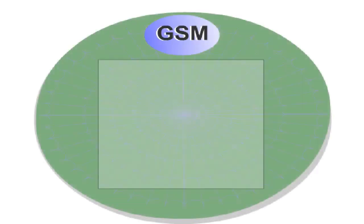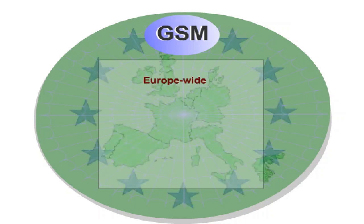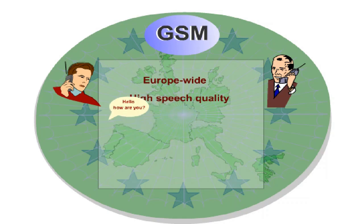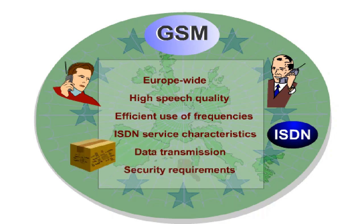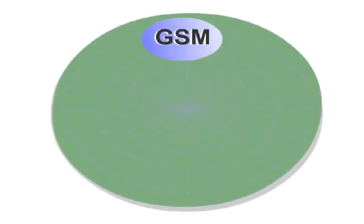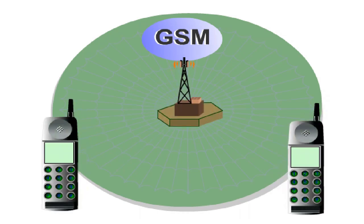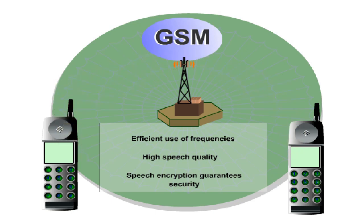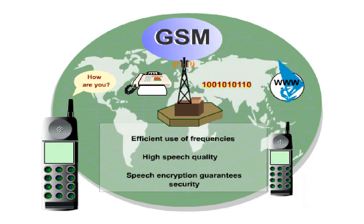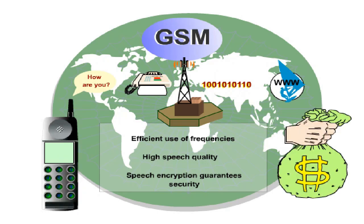The GSM specification had to consider the following: the system had to function Europe-wide, provide a high speech quality, use the available frequencies as efficiently as possible, provide ISDN service characteristics, be compatible with other ways of data transmission, and meet high security requirements. Many of these conditions have been turned into advantages for users today. The available frequencies are used efficiently, speech quality is higher than in analogue mobile networks, and speech encryption guarantees security. A wider range of services is provided, including voice, fax, data, and internet services, and international roaming between all GSM countries is possible. Furthermore, international competition reduces prices.